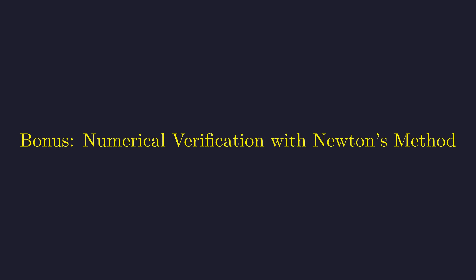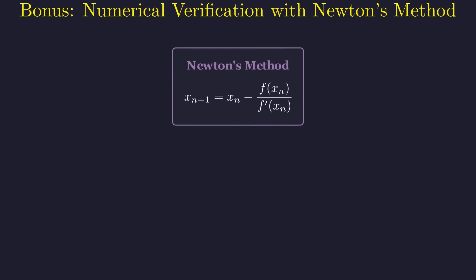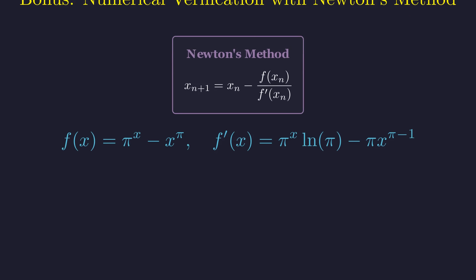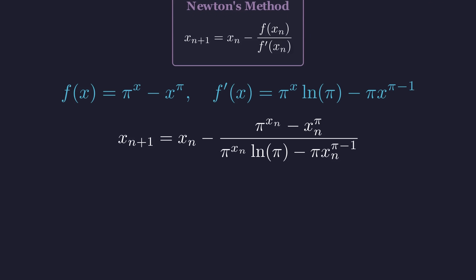But what if we didn't have the Lambert W function? We could still find that mysterious second solution using Newton's method, a powerful numerical technique. Newton's method finds roots of functions by using tangent lines. We start with a guess and iteratively improve it using the function value and its derivative. For our problem, we need to find where pi to the x minus x to the pi equals 0. The derivative uses the power rule and chain rule. Substituting our function and derivative into Newton's formula gives us this iteration formula.